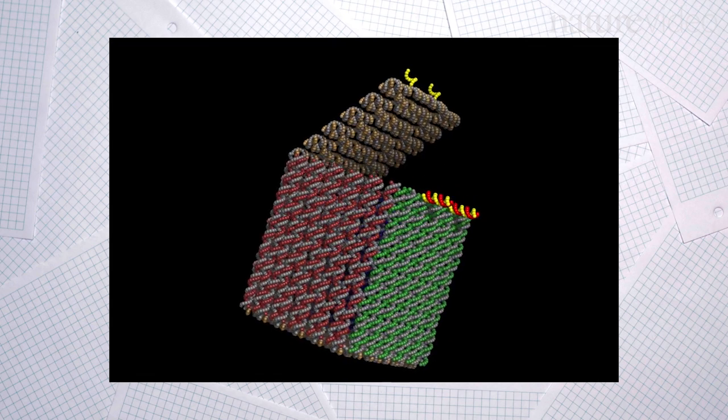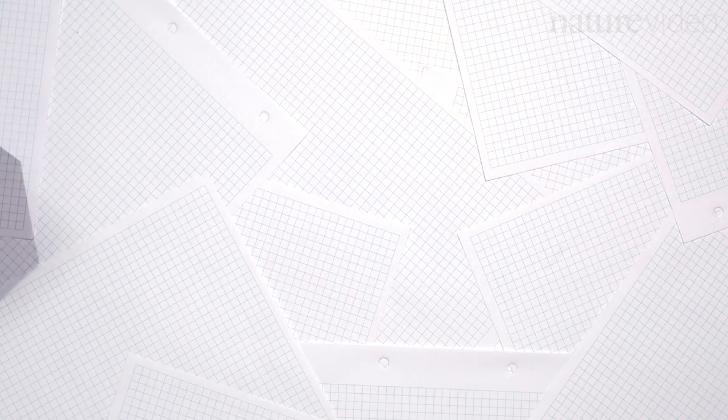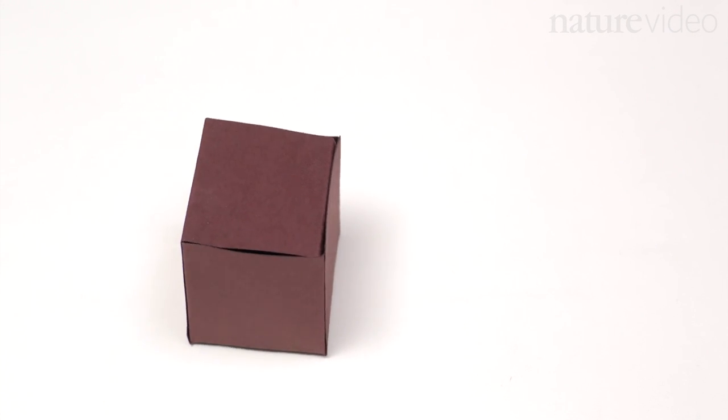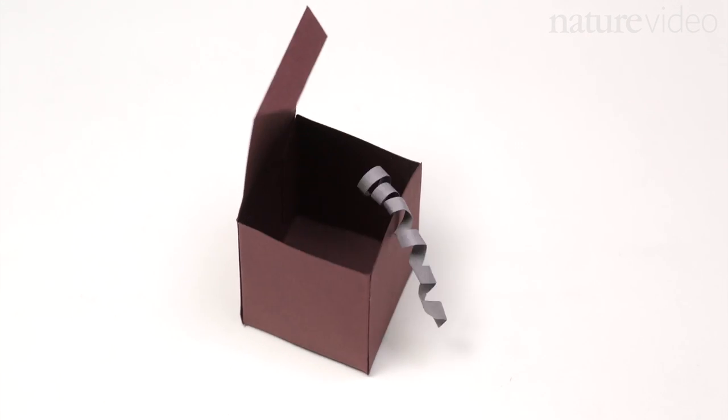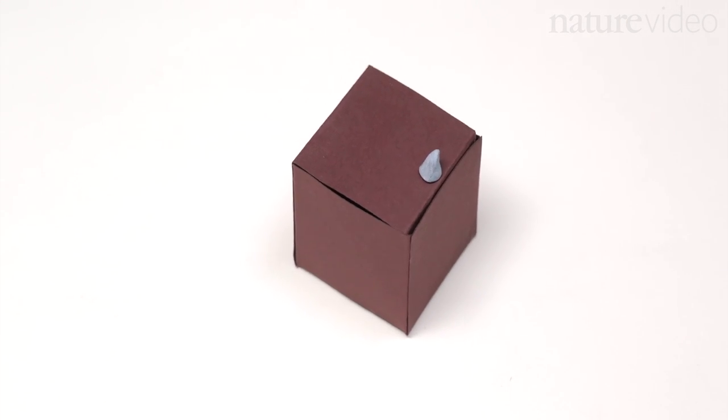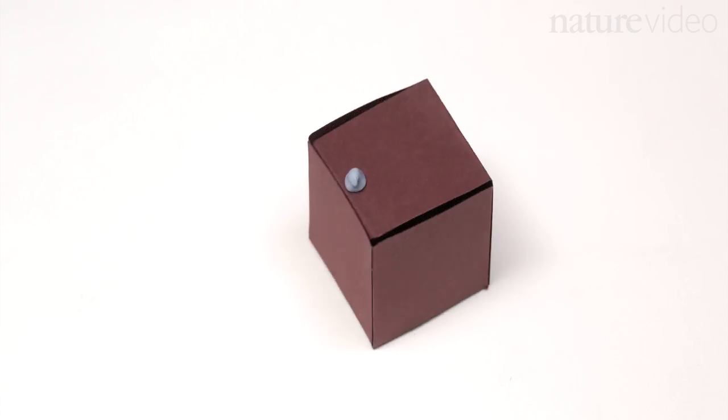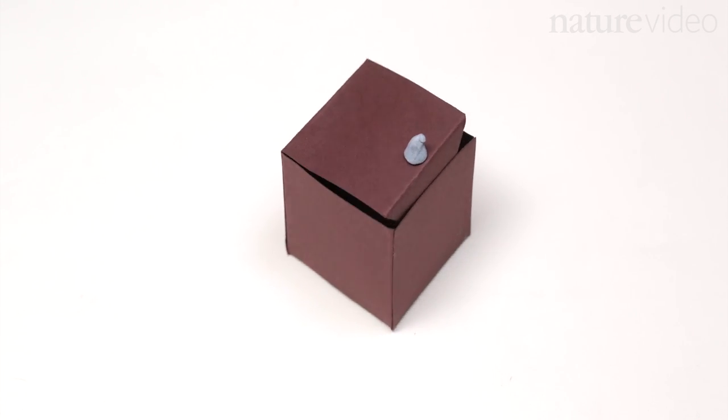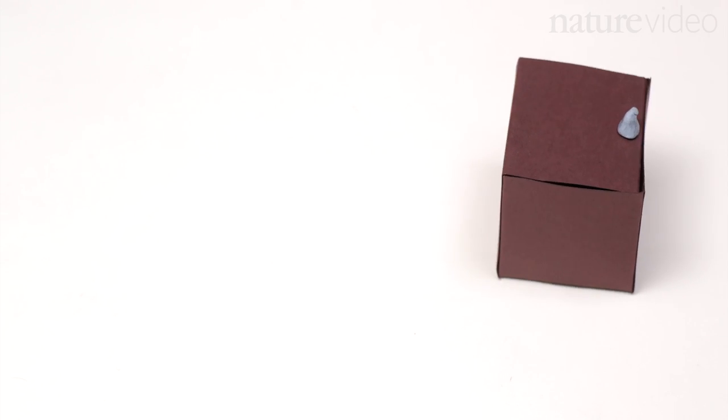In 2009, Danish researchers designed a DNA box that can open to release drug molecules. They even fixed a locking mechanism onto the lid: a molecule that acts as a sensor and could detect things like cancer cells to make sure drugs are released in the right place.